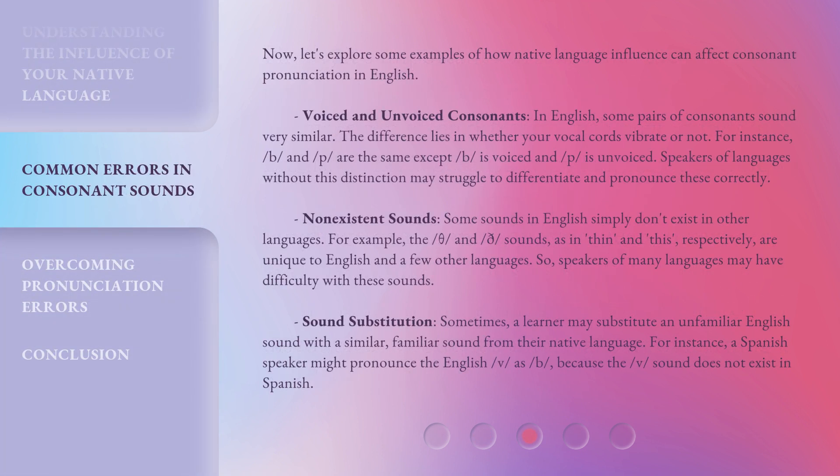Now, let's explore some examples of how native language influence can affect consonant pronunciation in English. Voiced and unvoiced consonants: in English, some pairs of consonants sound very similar. The difference lies in whether your vocal cords vibrate or not. For instance, B and P are the same except B is voiced and P is unvoiced. Speakers of languages without this distinction may struggle to differentiate and pronounce these correctly.